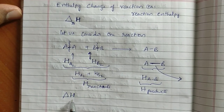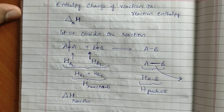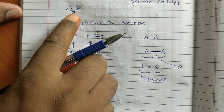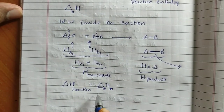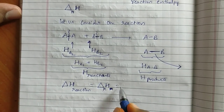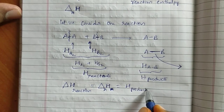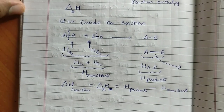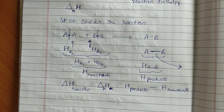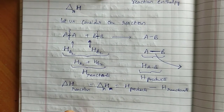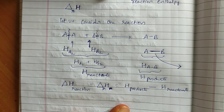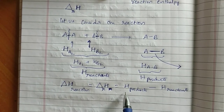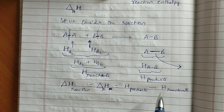Delta H is the change in enthalpy of reaction. Delta R H is equal to the heat energy of products minus the heat energy of reactants. In the above explanation, enthalpy of products is less than enthalpy of reactants because on the product side energy is released, so the remaining amount of energy is less. Therefore delta R H is negative.